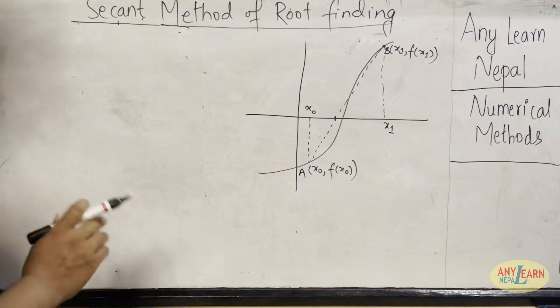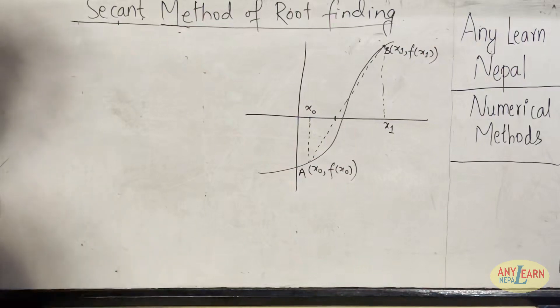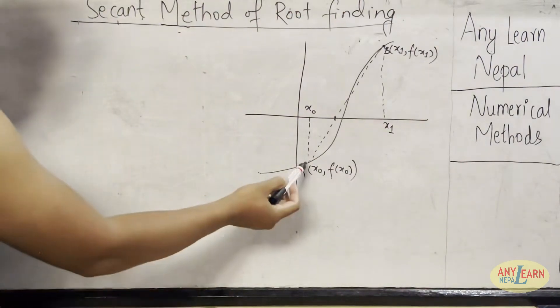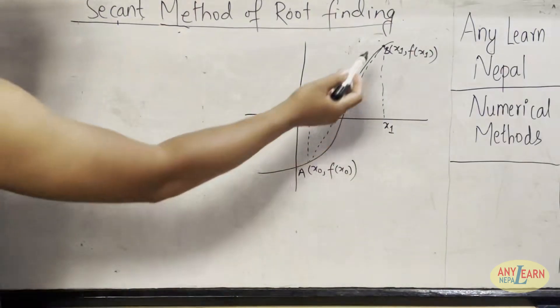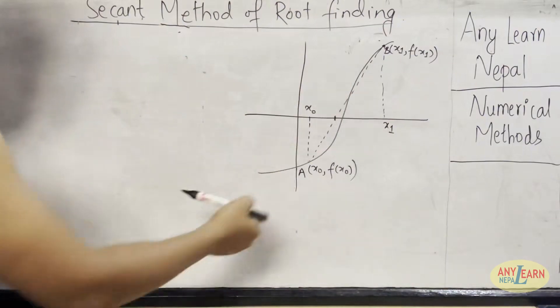Now let's find the mathematical expression for the secant method. In order to do that, we need the equation of the secant. So here we have produced AB secant from point A to B. Now let's first find the equation of that AB secant.